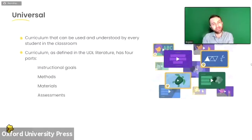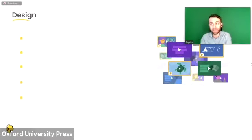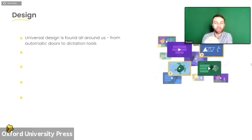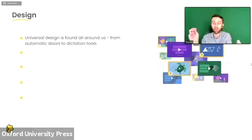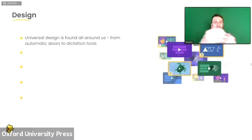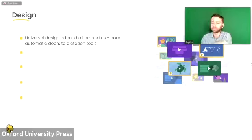The "design" part refers to design in general. We can see design all around us — think about automatic doors, for example. When you go into a shop or building, the automatic doors and the structure beneath them are an example of universal design. That helps everybody going inside or outside a building. Dictation tools are another example of design that makes things universal and available for everybody.